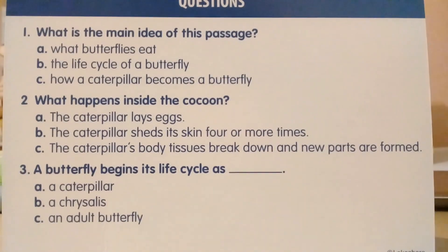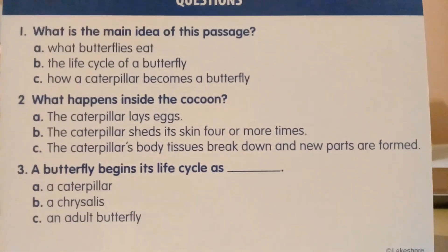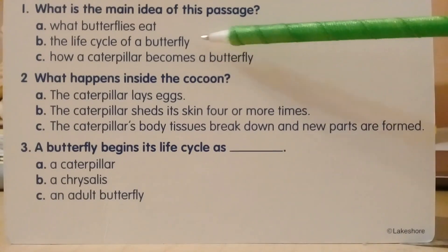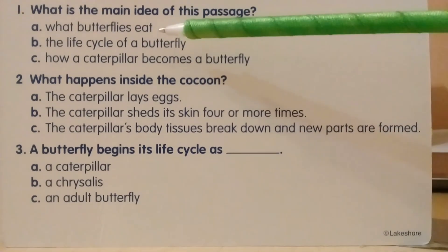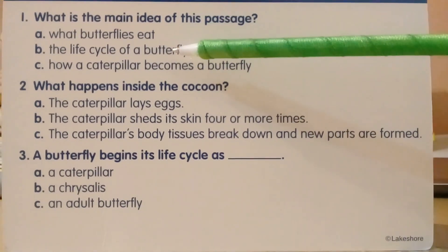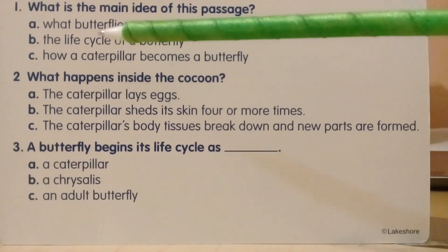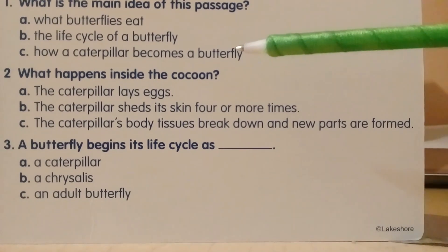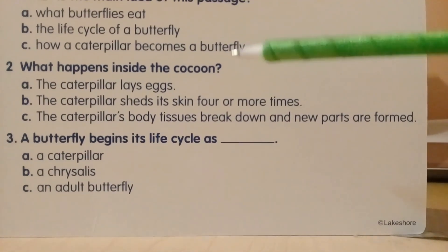These are the questions that came on the back of the card — the same one called 'Beautiful Butterflies.' Question one: what is the main idea of this passage? It gives us some options: A — what butterflies eat; B — the life cycle of a butterfly; C — how a caterpillar becomes a butterfly. I know right away A could not possibly be the answer because it has nothing to do with what butterflies eat — it barely even mentions it. B and C though are quite similar.